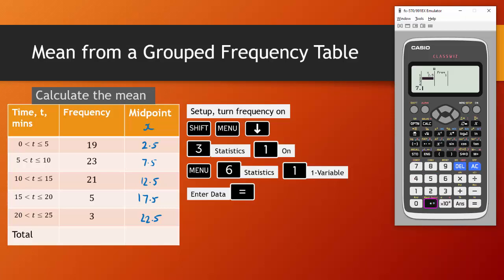7.5, 12.5, 17.5 and 22.5. We can scroll down to the top now and we can put in our frequencies. So our frequencies are 19, 23, 21, 5 and 3. Just make sure you press equals after the last one so you're on the next row here.